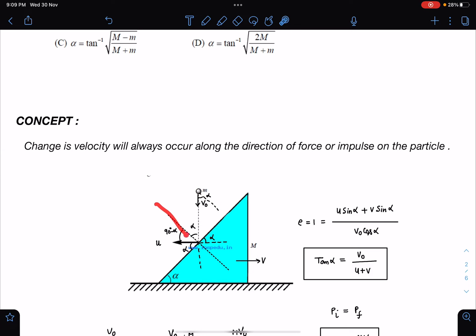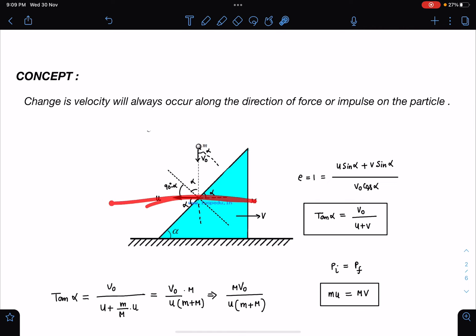Separation is going to happen along this line, so this is U cos(90 - alpha) which is U sin alpha plus V sin alpha. Here I can easily write tan alpha equals V₀ divided by (U + V). That's equation one.